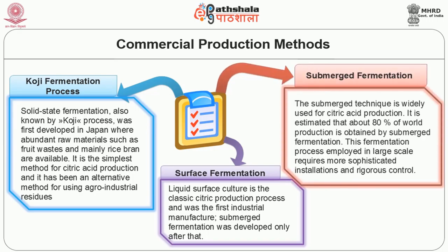Third, submerged fermentation: this is a technique widely used for citric acid production. It is estimated that about 80% of world production is obtained by submerged fermentation. This fermentation process employed in large scale requires more sophisticated installations and rigorous control. On the other hand, it presents several advantages such as higher productivity and yields, lower labor cost, lower contamination risk and lower energy consumption. Submerged fermentation can be carried out in batch, fed-batch or continuous systems, although the batch mode is more frequently used.